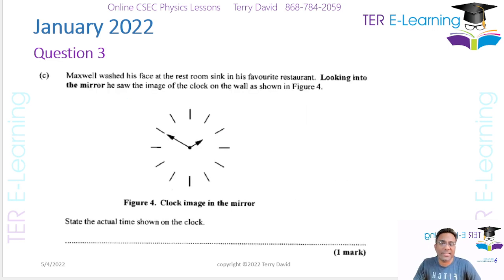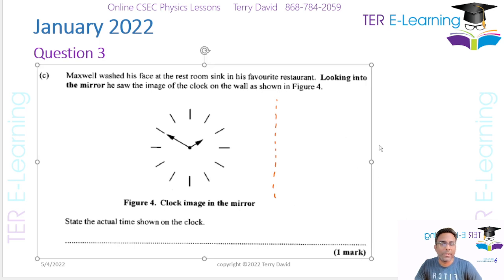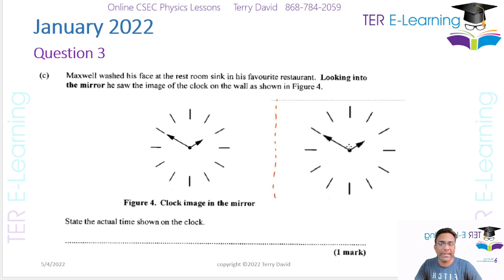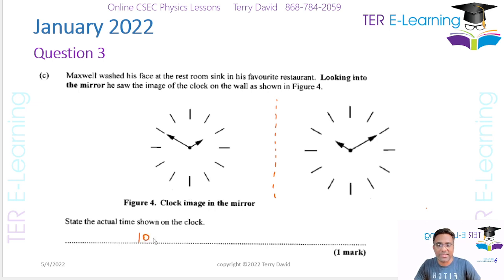The next part: Maxwell washed his face in a restroom sink and looking into the mirror he saw the image of a clock on the wall. What he's seeing is the image, not the actual time. The diagram on the right-hand side represents the mirror image, so the actual time — if you flip it — is actually 10:10. That's your answer: 10:10.